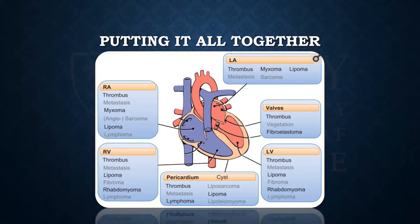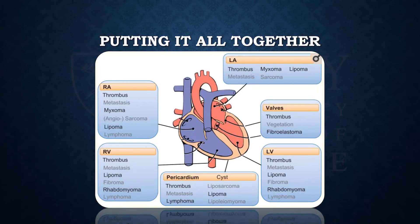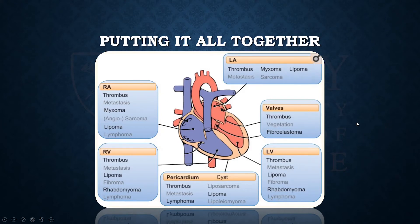This critical slide works backwards — rather than asking where tumors arise, it asks: if a tumor is found in a particular location, what is it most likely to be? If you have a tumor arising from the valve, it's probably a thrombus, a vegetation, or a fibroelastoma in that order. If I see a tumor in the right atrium, the differential is broader: most commonly a thrombus, a met, a myxoma, an angiosarcoma, a lipoma, or a lymphoma. Location is a crucial part of the diagnostic puzzle.